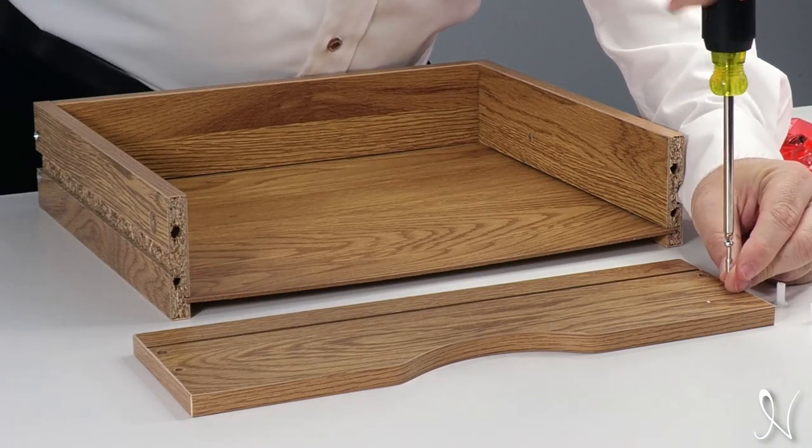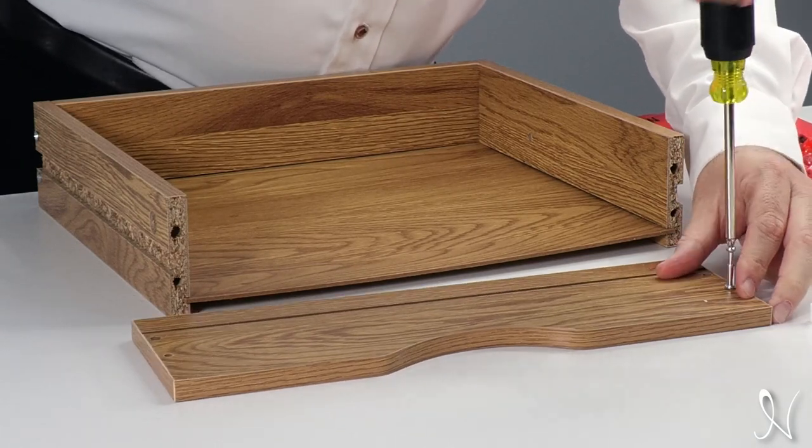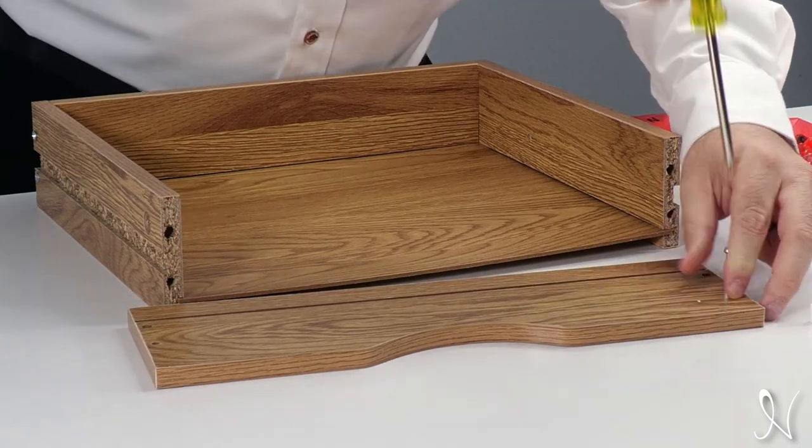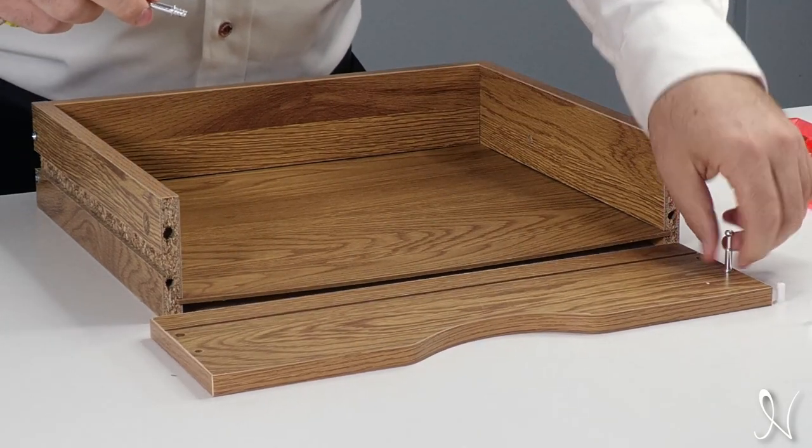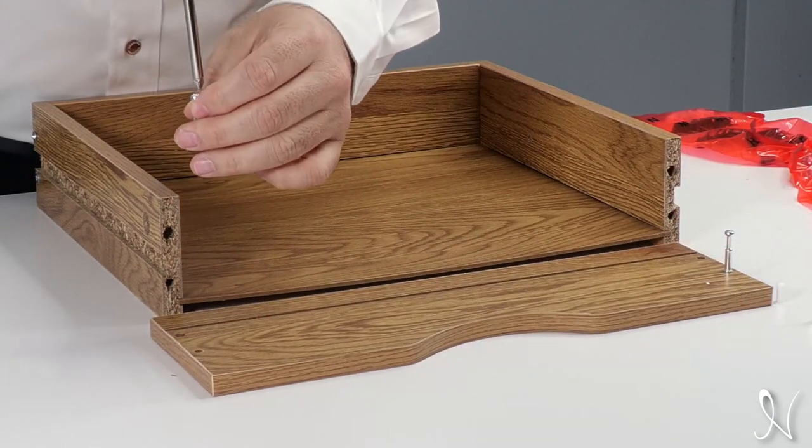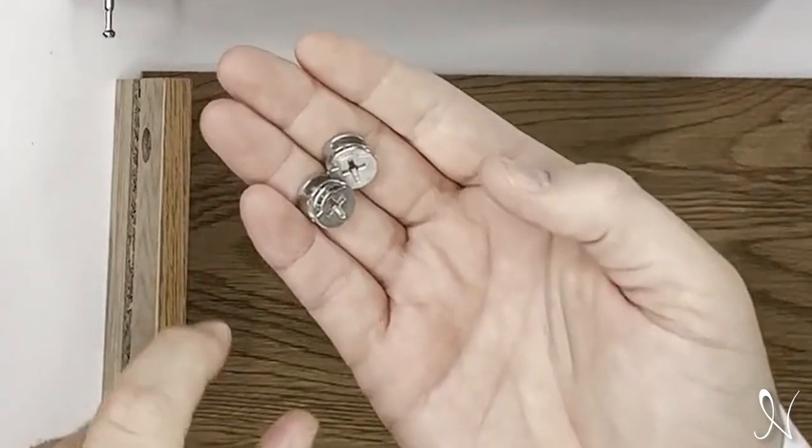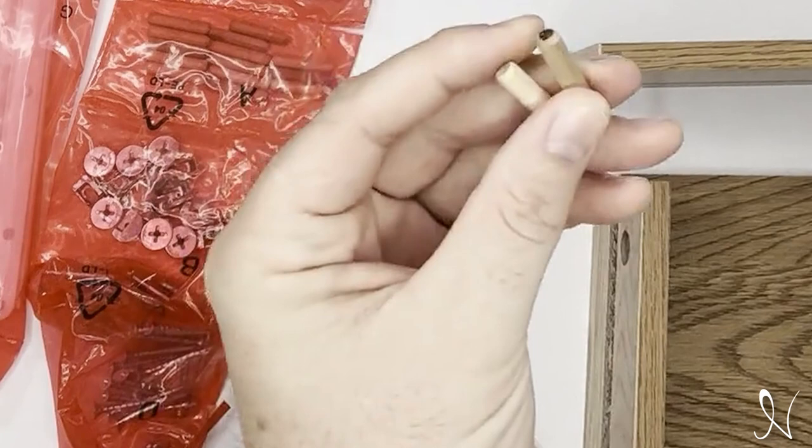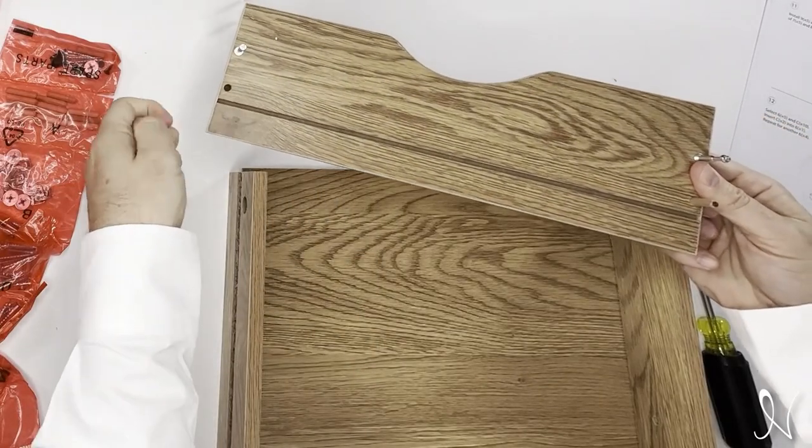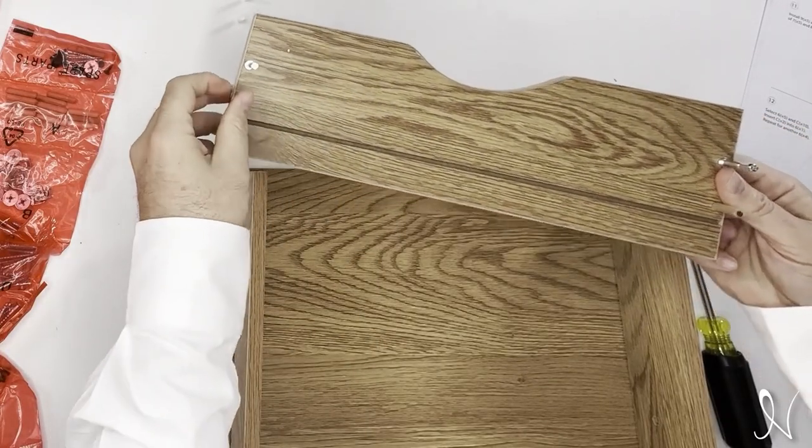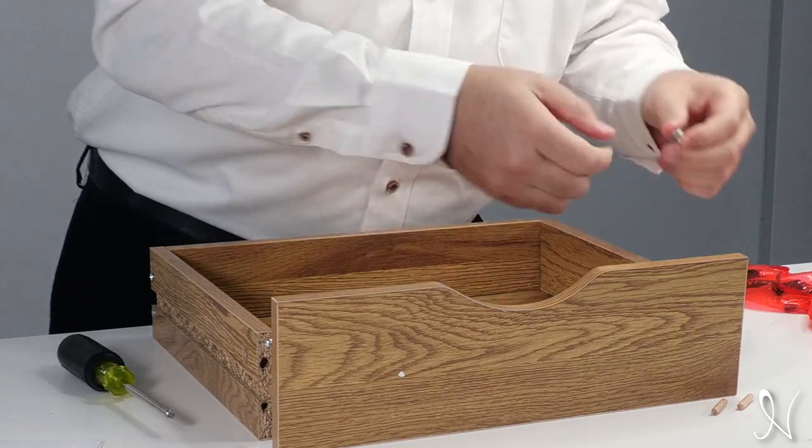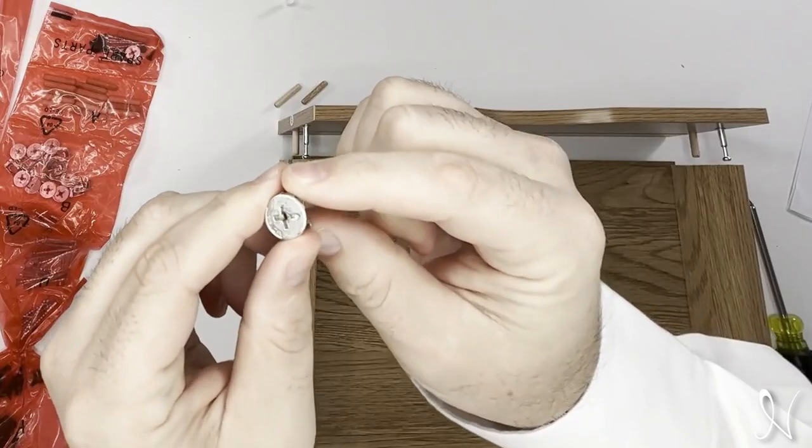Now we're going to take our drawer front and we're going to use two cam bolts and connect them into our drawer front. Tighten all the way down until they're snug. Next we're going to need to take two cam locks as well as two wooden dowels. Those wooden dowels are going to go into the holes of the drawer on the drawer front, and then we're going to align our holes up.